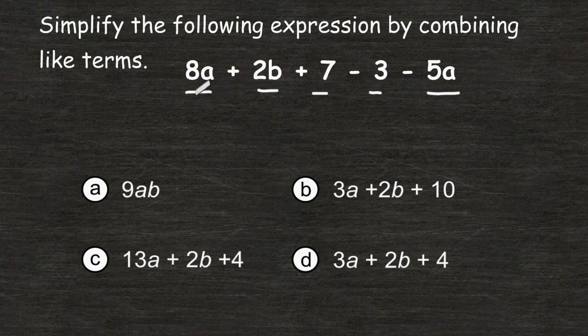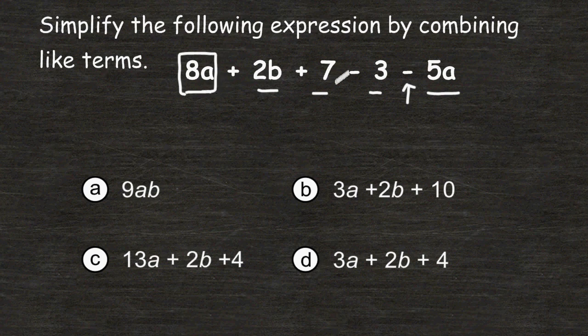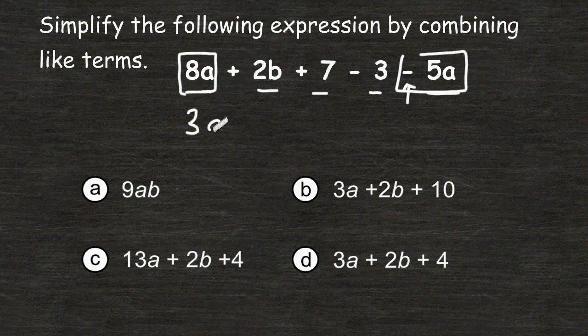The first term says 8 times a, and we have another term with the variable a in it, which is 5a. But remember, you must also consider the sign in front of that term as part of that term. For example, I would read this as 8a take away 5a, which would leave us with a total of 3a.